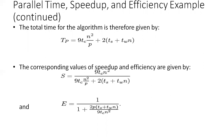As shown in this formula, the speedup of this example is calculated, and the efficiency is calculated as E = S / p. Substituting the value of S, we get the final efficiency as: E = 1 / (1 + 2p(Ts + Tw·n) / (9·tc·n²)).